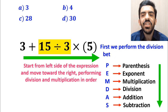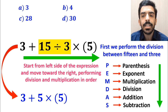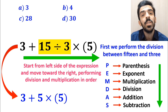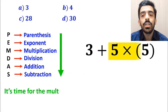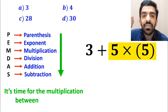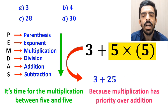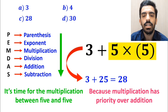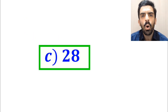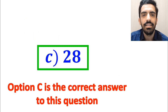So first we perform the division between 15 and 3, which simplifies this expression to 3 plus 5 times 5. In the next step it's time for the multiplication between 5 and 5, so we can write 3 plus 25, which ultimately gives us the answer 28. Therefore, option C is the correct answer to this question.